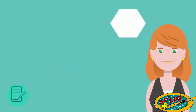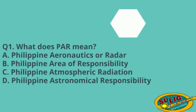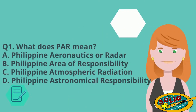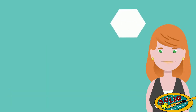Before we discuss our new lesson, let's check your knowledge about this module. I will be showing three questions for you to answer — write the letter of the correct answer in your activity notebook or paper. Question number one: What does PAR mean? A. Philippine Aeronautics or Radar. B. Philippine Area of Responsibility. C. Philippine Atmospheric Radiation. D. Philippine Astronomical Responsibility. What do you think is the correct answer?